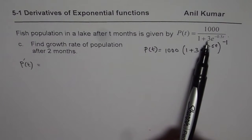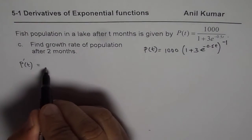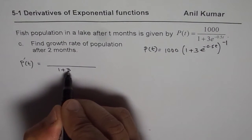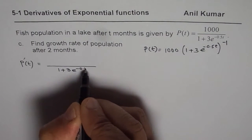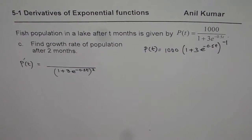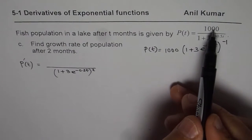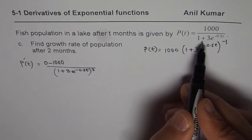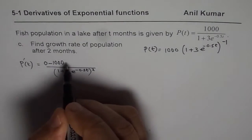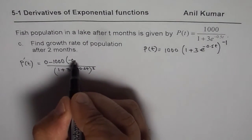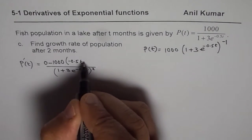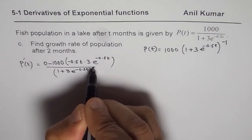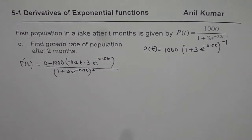Here I will use the quotient rule. The derivative has the square of the denominator — that is, 1 plus 3e to the power of minus 0.5t, whole squared — as the denominator. In the numerator, the derivative of 1000 is 0, so we get 0 minus 1000 times the derivative of the denominator. Let me write that in brackets: the derivative involves minus 0.5t times 3 times e to the power of minus 0.5t.